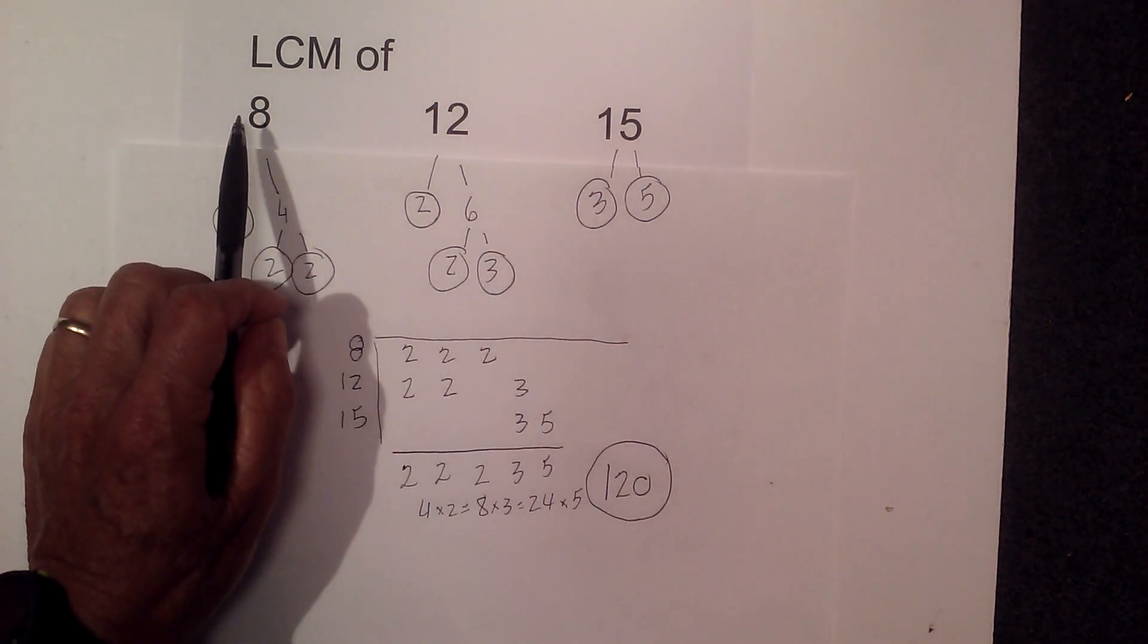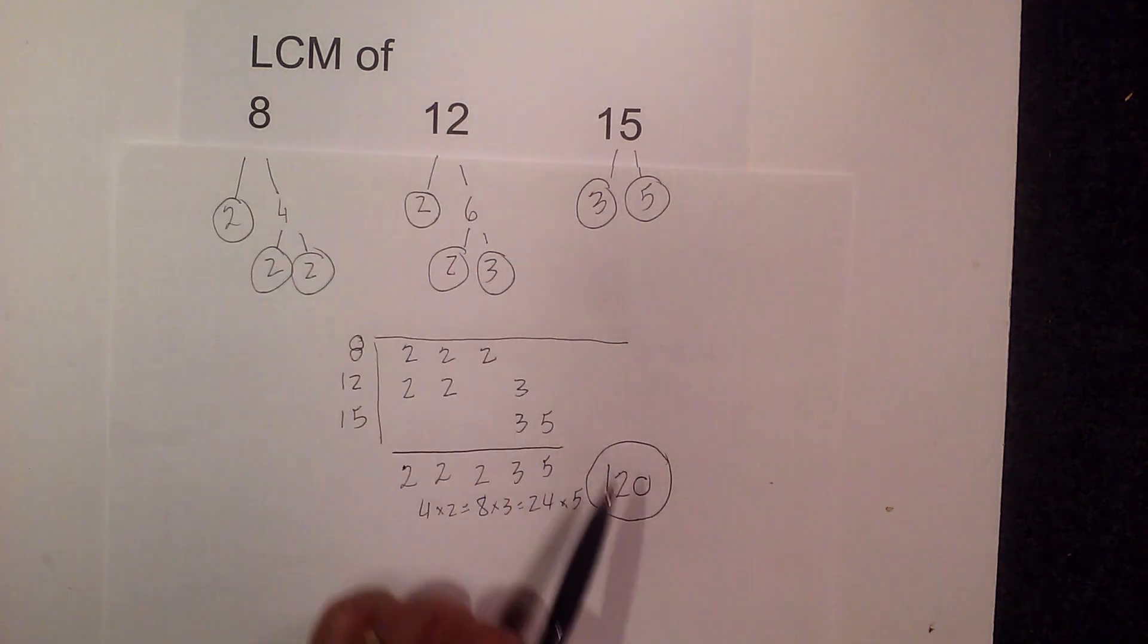So the least common multiple of 8, 12, 15 is 120. Thanks for watching and MooMath uploads a new math and science video every day. Please subscribe and share.